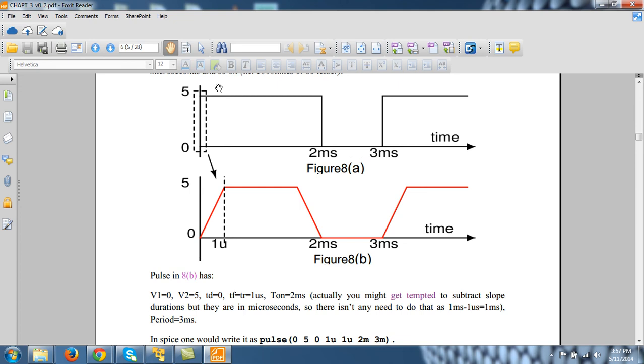It will not be visible and hence this approximation is good. Now you can see that we have finite rise time here, finite fall time here, non-zero fall time here, non-zero rise time here. This looks like a general pulse and hence we can write that it's pulse.